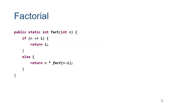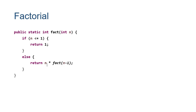Here's an example of a recursive Java method. Notice in this line, after we get the result of factorial of n minus 1, we multiply it by n to get the factorial of n. So we're waiting around for this function to complete before we finish doing the computation in the calling method.